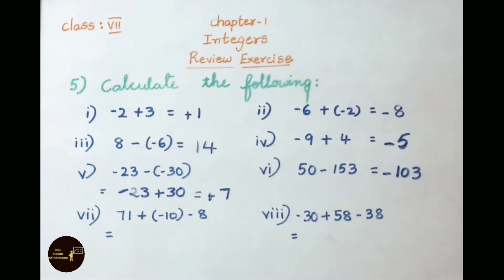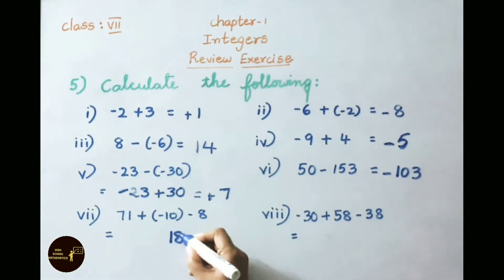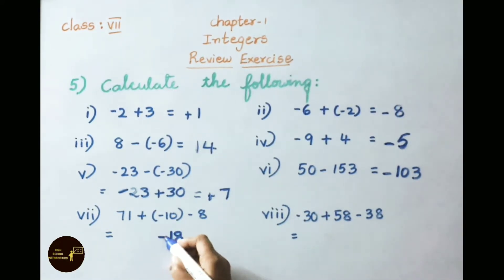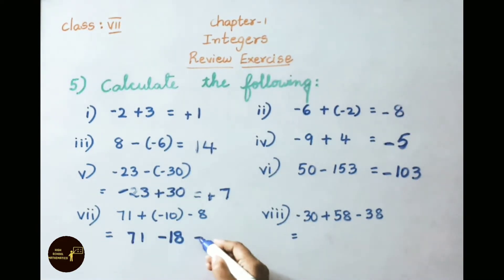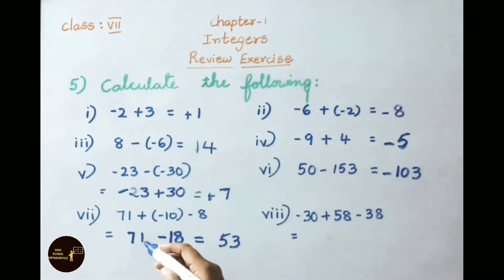See the seventh sum: 71 plus minus 10, minus 8. Minus 10 and minus 8 are the same sign, so we do addition: 10 plus 8 equals 18, with a minus sign giving minus 18. Now 71 minus 18 — opposite sign, do subtraction: 71 minus 18 equals 53. Since 71 is a positive integer, keep the plus sign. The answer is plus 53.